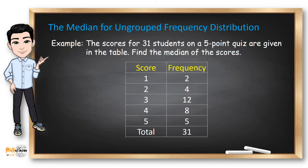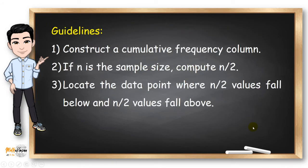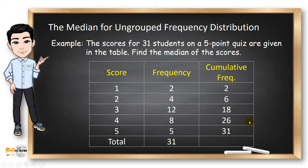Using the previous example, we will now find the median for this ungrouped frequency distribution following these guidelines. We start by preparing the column for the cumulative frequency. For those who don't know, you just start with the topmost frequency which in this case is 2. 2 plus 4 is 6. 6 plus 12 is 18. 18 plus 8 is 26. And 26 plus 5 is 31.